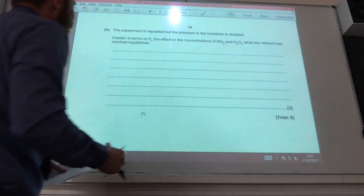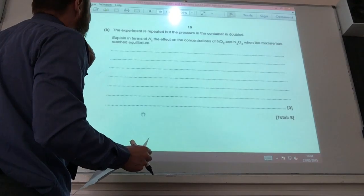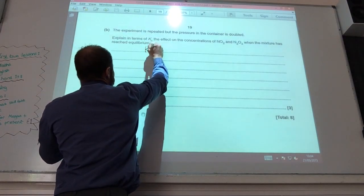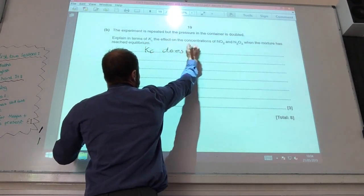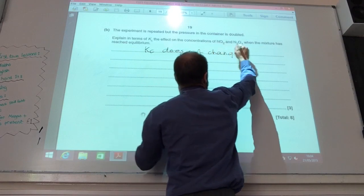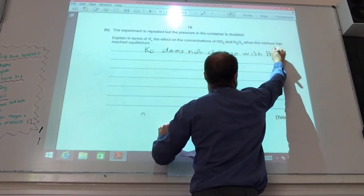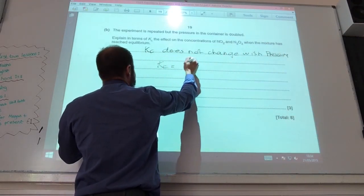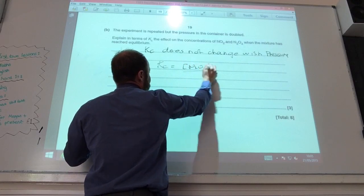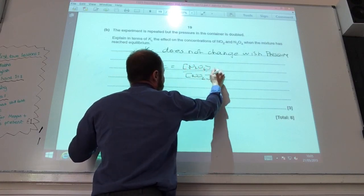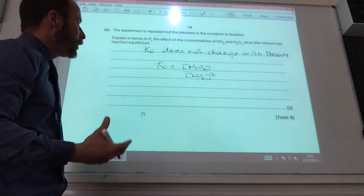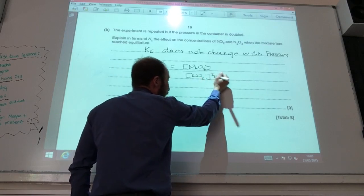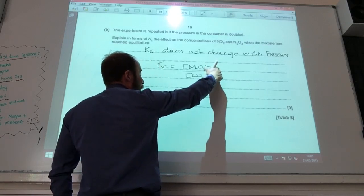Right, so Kc is repeated and the pressure in the container is doubled. What explains to Kc the effect of the concentration. So Kc does not change with pressure, first of all. It only changes with temperature. If we have a look at Kc again. Kc, we said, was that. If we double the pressure, it's going to have a larger effect on the concentration of NO2 because it's squared, then it will up the top here.